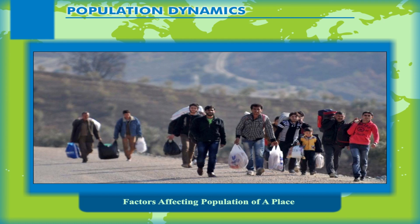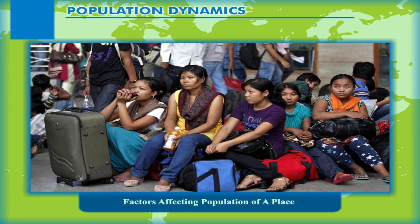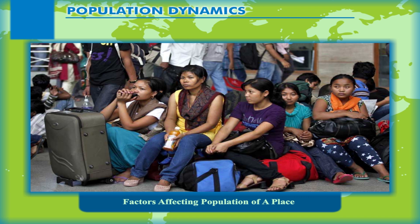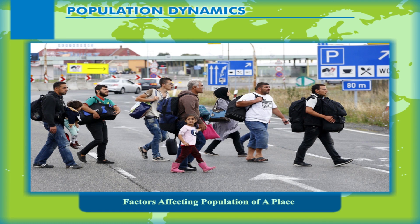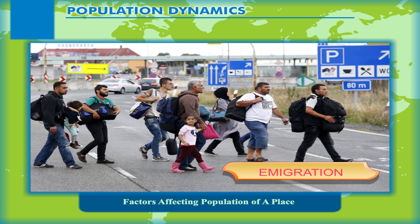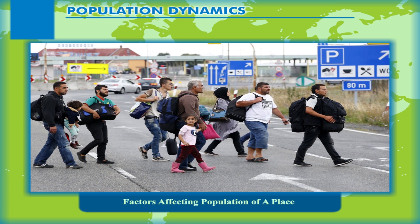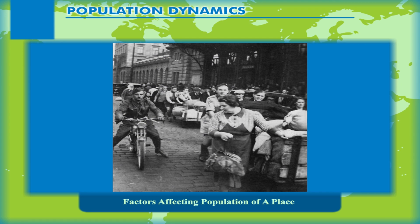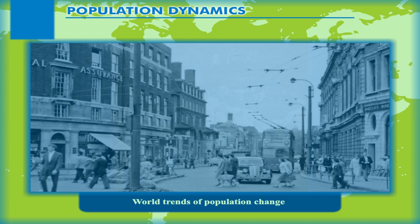Besides natural increase, population change is also affected by migration or movement of people from one place to another. When people from another area or country come into an area, it is called in-migration or immigration. On the contrary, when people leave an area or country to settle in some other place, it is called out-migration or emigration. Presently, migration is very limited due to strict migration laws in many nations, but in historical times, a number of people migrated thousands of kilometres to settle in new lands, causing population changes in different areas of the world.